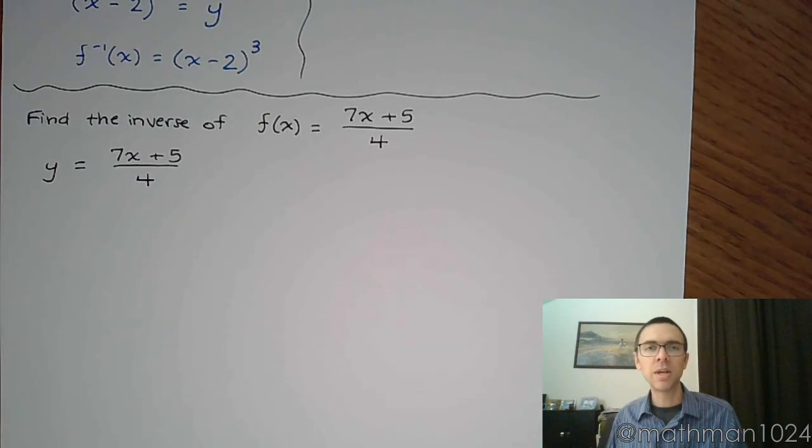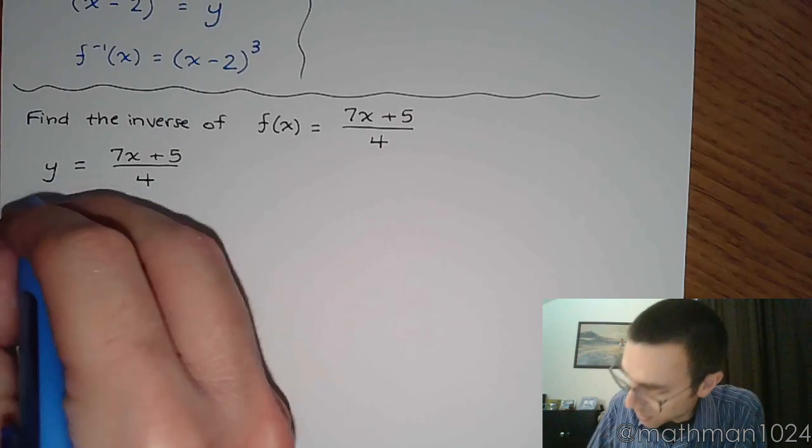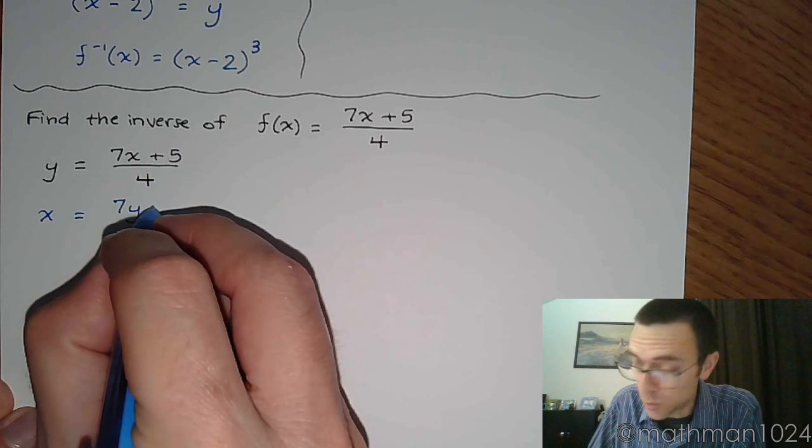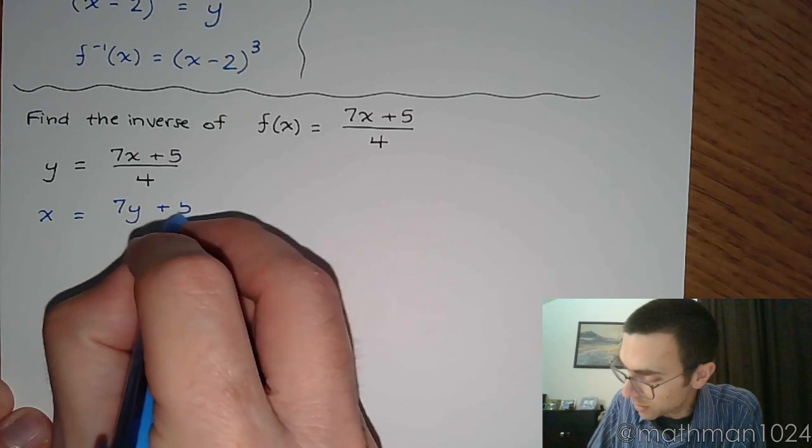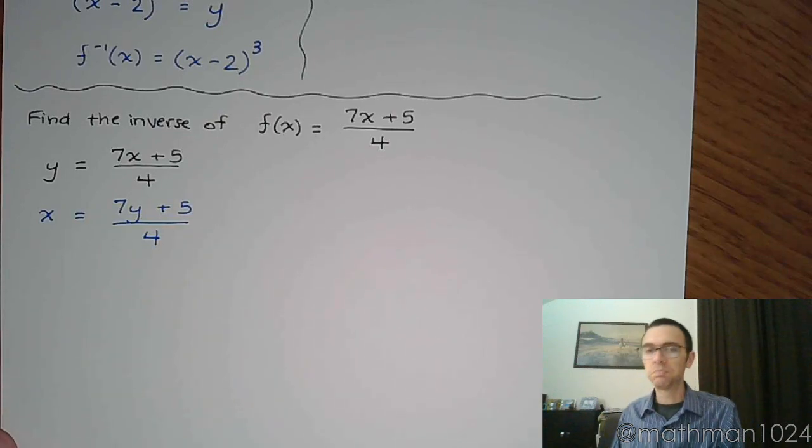So that means the first thing that I do is that instead of writing f of x, I'm going to say y equals 7x plus 5 all over 4. Okay? That's the first step. The second step says rewrite the x's as y's and rewrite the y's as x's.